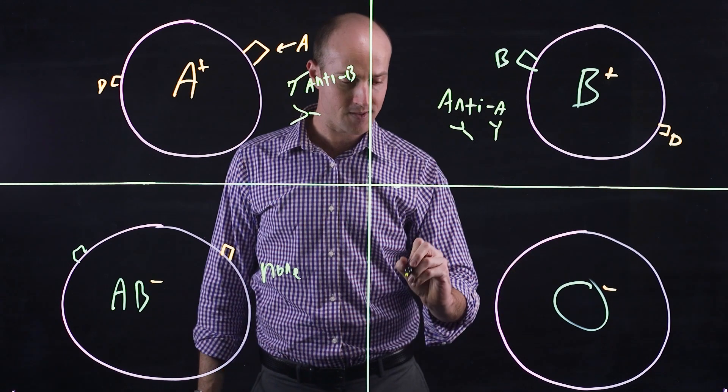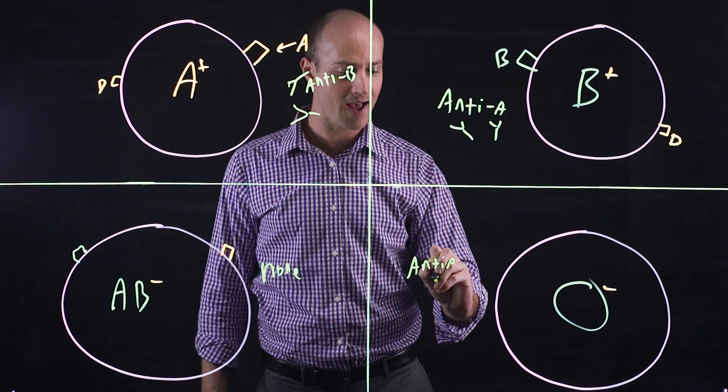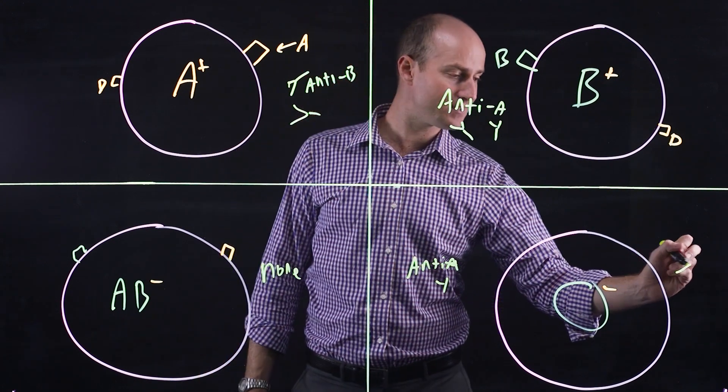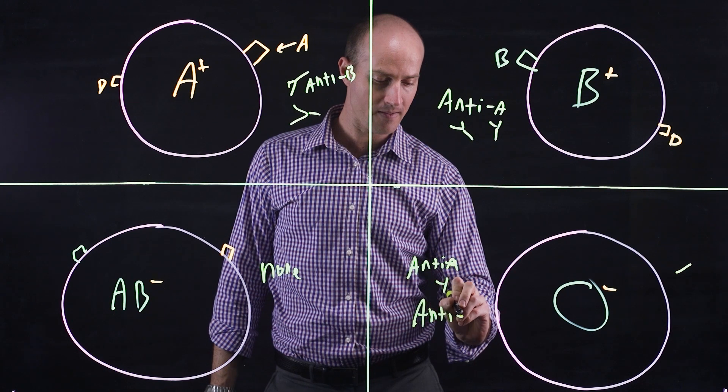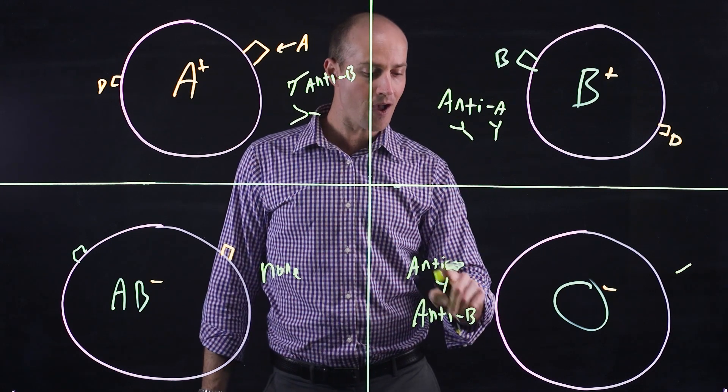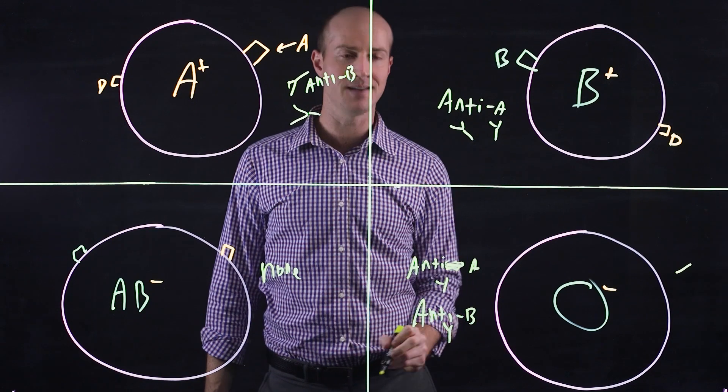O however has nothing on the surface. It actually generates anti-A and it also generates anti-B. Which means the O blood type has anti-A and anti-B antibodies.